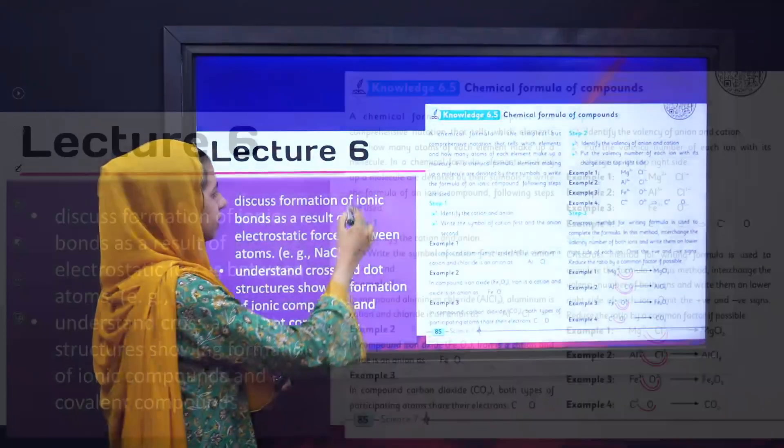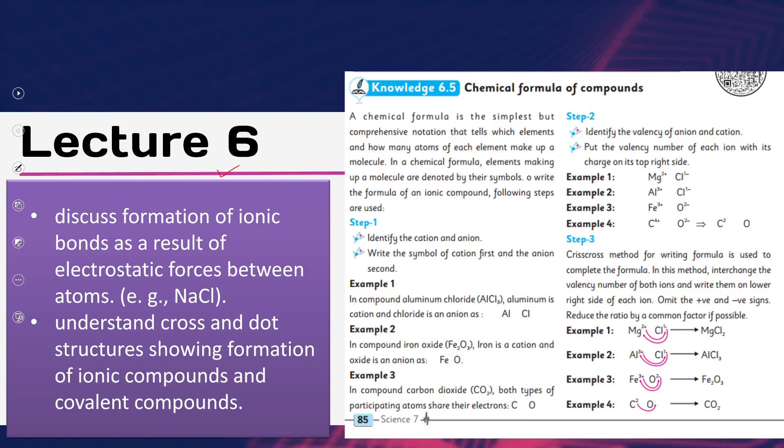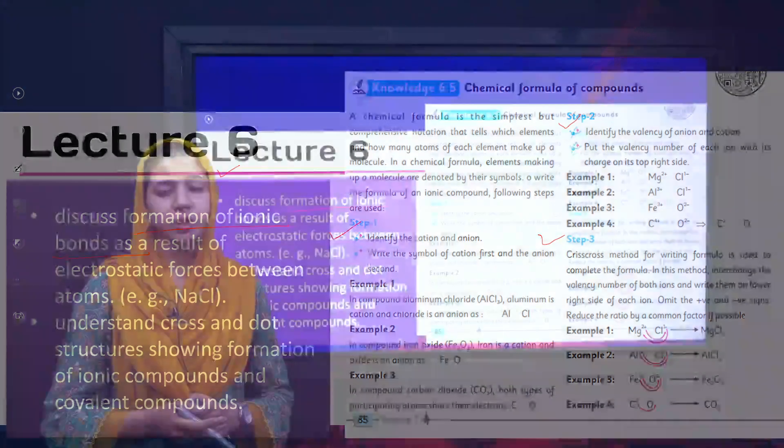In lecture 6, we will discuss what ionic bonds are and how we write their formulas. We will discuss the steps with the help of which we can easily write chemical formulas for ionic compounds, and we will discuss different examples so we can understand them in a better way.